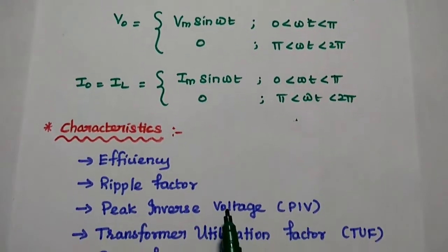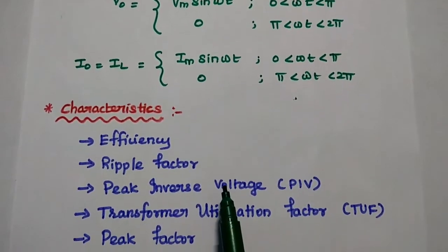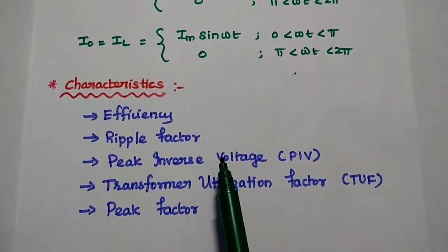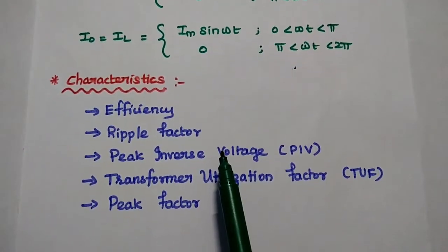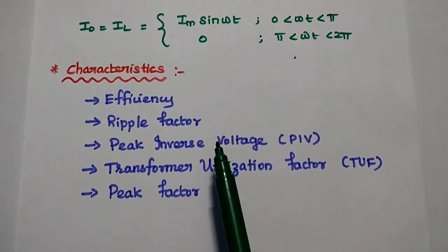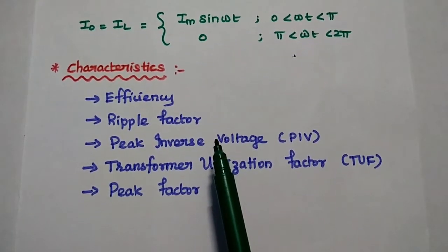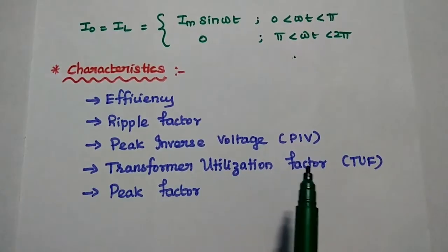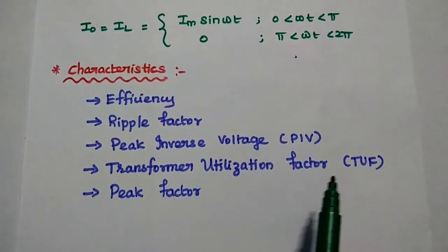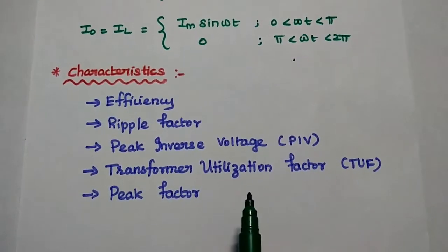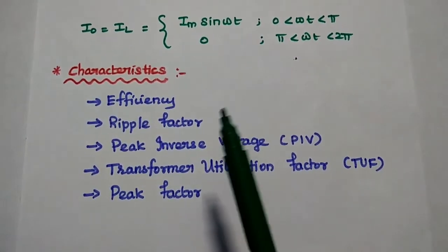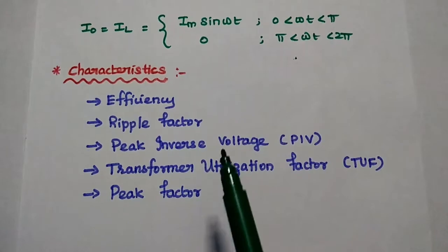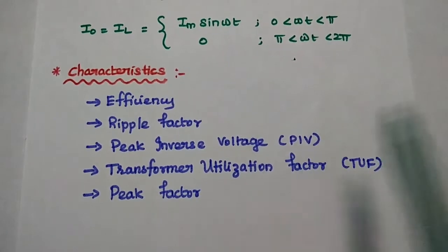Next we are going to analyze the characteristics of this half-wave rectifier: efficiency, ripple factor, peak inverse voltage, transformer utilization factor, and peak factor. Let's derive each parameter in detail.